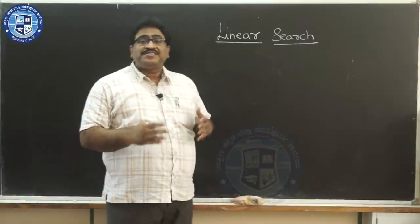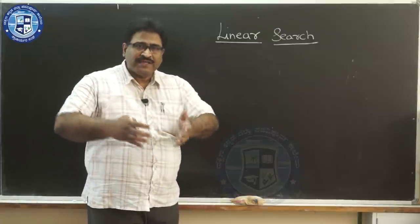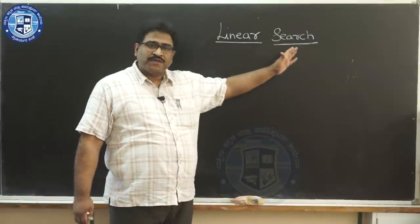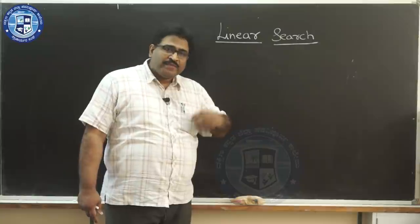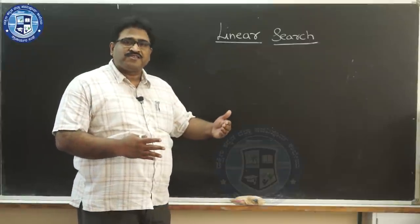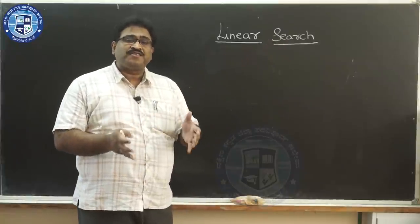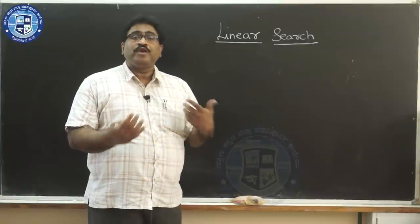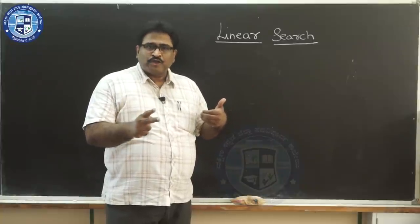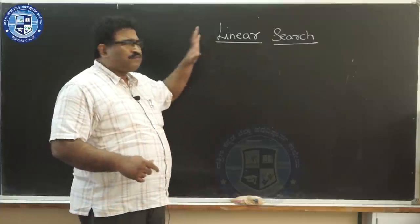Linear search is also called sequential search. It starts from the first element, then goes to the next in sequence, then to the third, fourth, fifth — that is what linear search is. It looks for the element; if it exists, you stop searching. If it doesn't exist, you go to the last position and come out. When you come out, there are two possibilities: you have found the element or you have not found it.